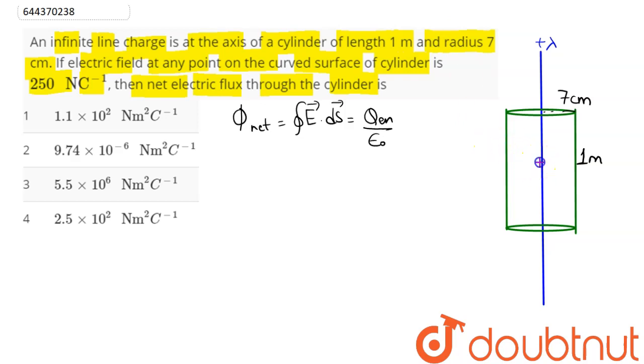Here we can say electric field and the curved surface area of this cylinder are parallel to each other. That is, they make an angle of 0 degree with each other. This is our repulsive electric field as the wire is positively charged and curved surface area of the cylinder is perpendicular to the curved surface, that is parallel to electric field vector.